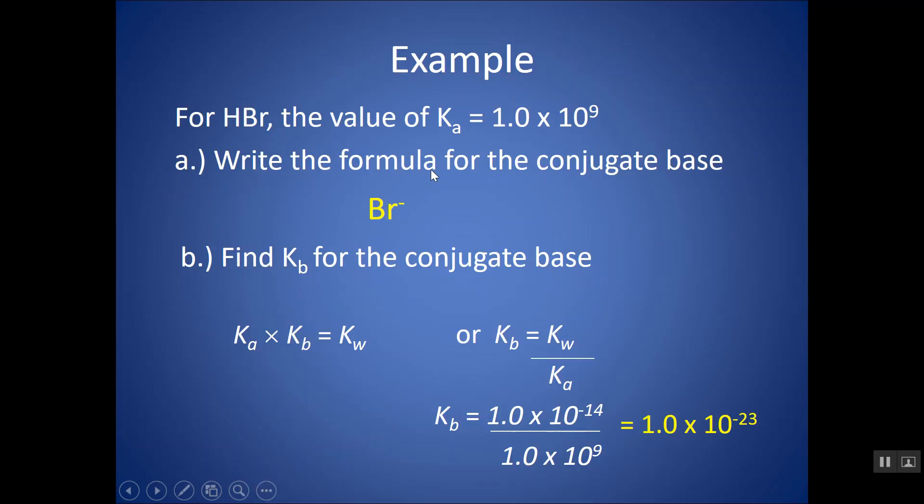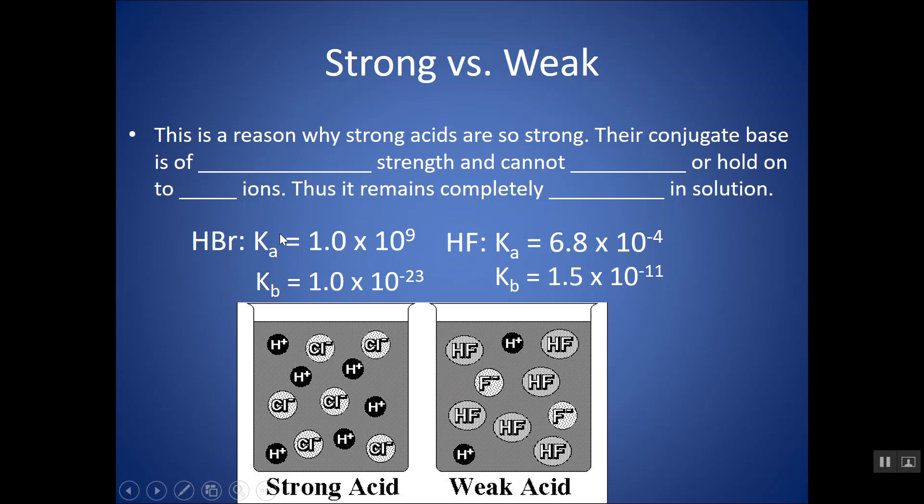This is actually the reason why strong acids are so strong. If I looked at the first example I did with HF, my Ka is a relatively weak acid, and my Kb is kind of equivalent to a relatively weak base. For HBr, which is a strong acid, I have a really large Ka, something much bigger than 1. Notice that my Kb value becomes so small in order for that product to still come out to be 1 times 10 to the negative 14.